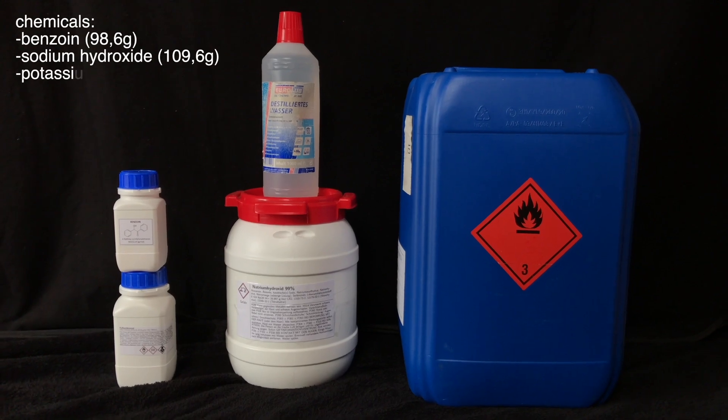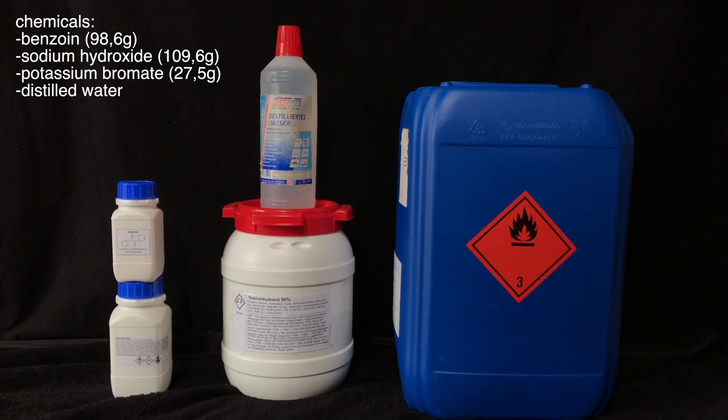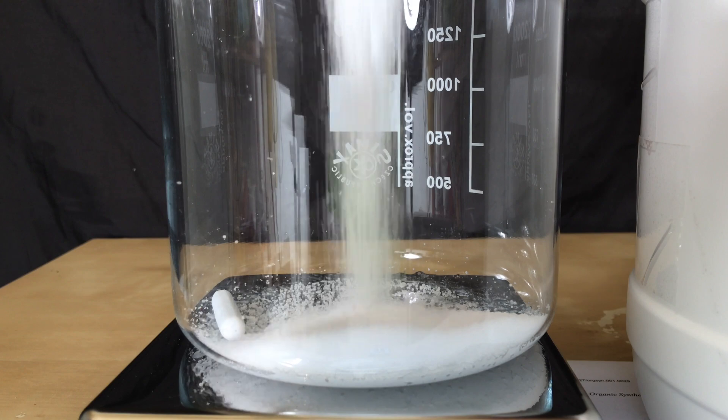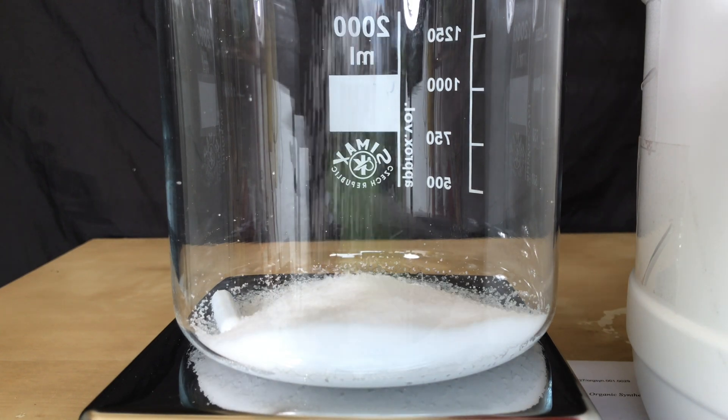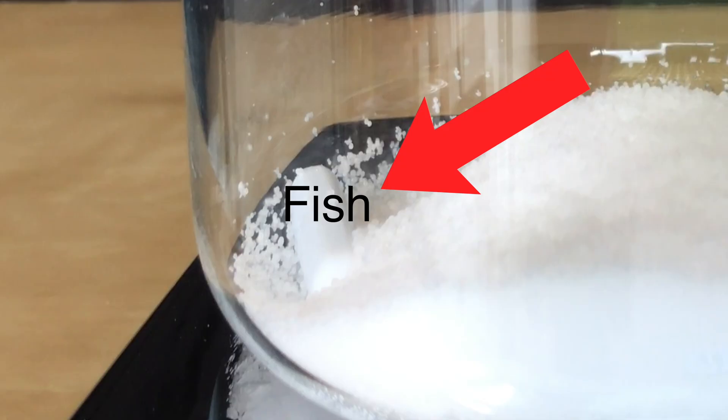For the preparation we're going to need 98.6 grams of benzoin, 109.6 grams of sodium hydroxide, 27.5 grams of potassium bromate, and a lot of distilled water. We then began by adding the sodium hydroxide to a beaker which already contained the stir fish.